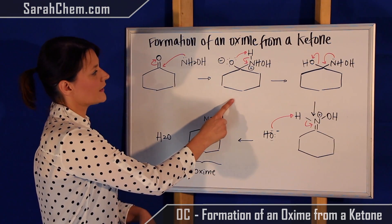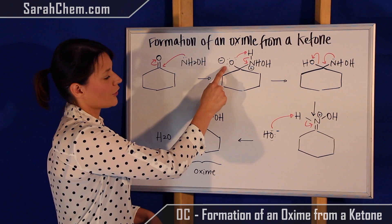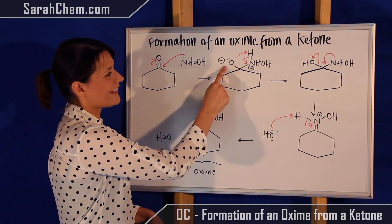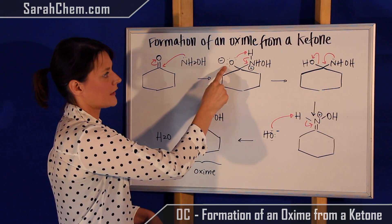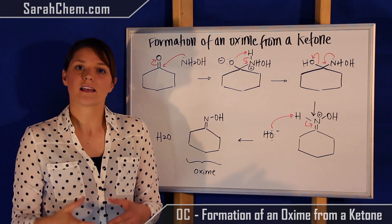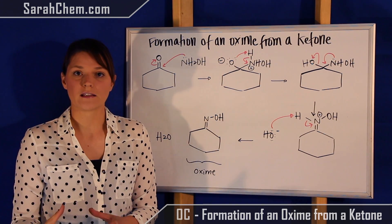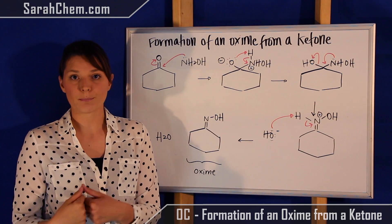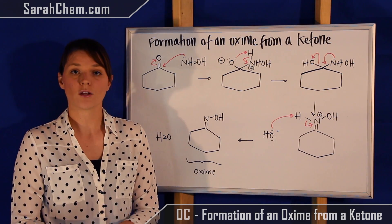So over here, what we're going to see is this oxygen with that negative charge is going to get protonated. It's going to take the hydrogen off of this nitrogen position and protonate itself. The way you know that this is going to happen is, if you have a tetrahedral intermediate, if you want a group to stay, you're typically going to deprotonate it. And if you want a group to leave, you're going to protonate it.